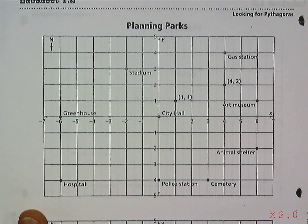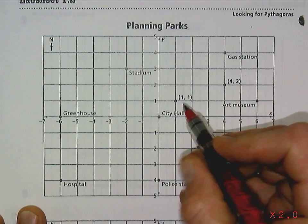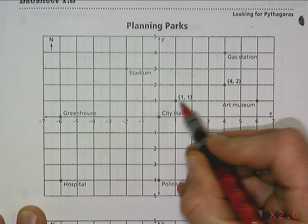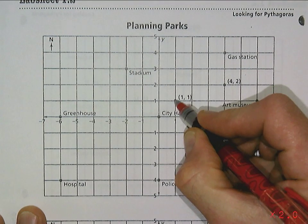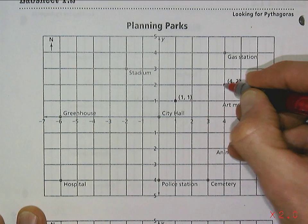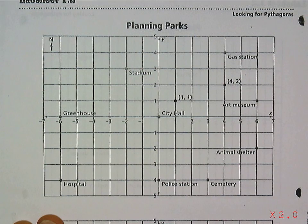In today's lesson in Looking for Pythagoras, we're in problem 1.2. The Euclid City Council is trying to create a park, and they've decided that the points (1,1) and (4,2) are going to be vertices or corners of the park. And they want to make the shape of the park different geometric shapes.